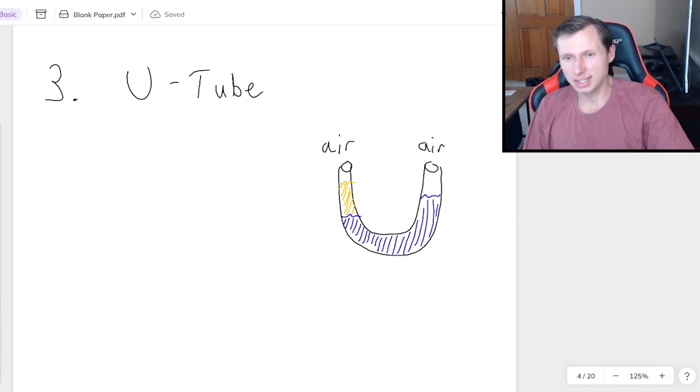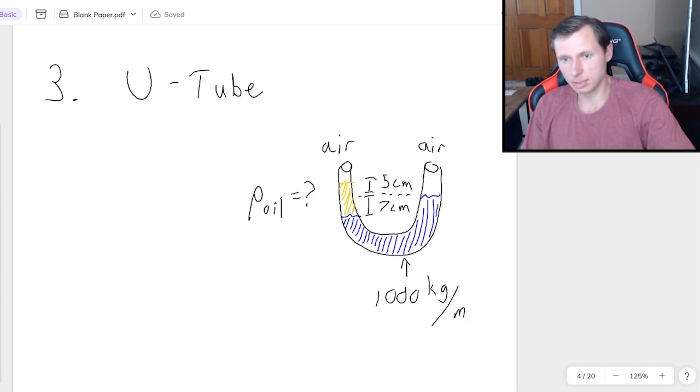My question is going to be if this distance is seven centimeters, and then this distance here to the top is five centimeters, I want us to calculate the density of the oil, given that this is still water, it's still 1000 kilogram per meter cubed. So how on earth are we going to solve this one?